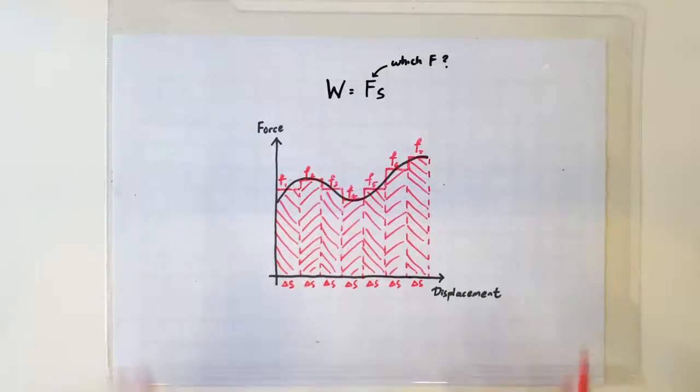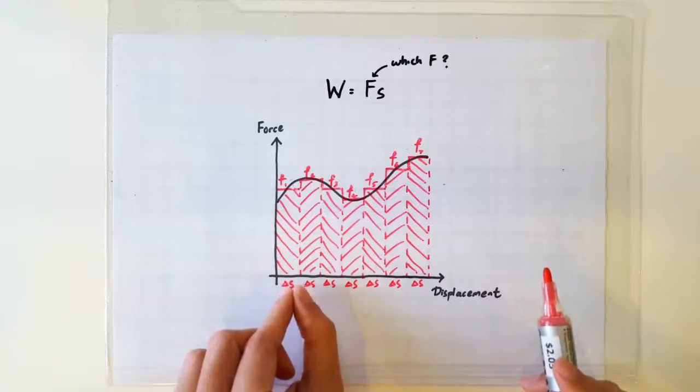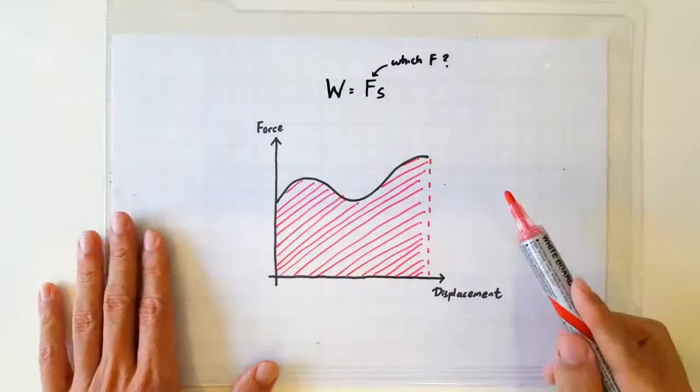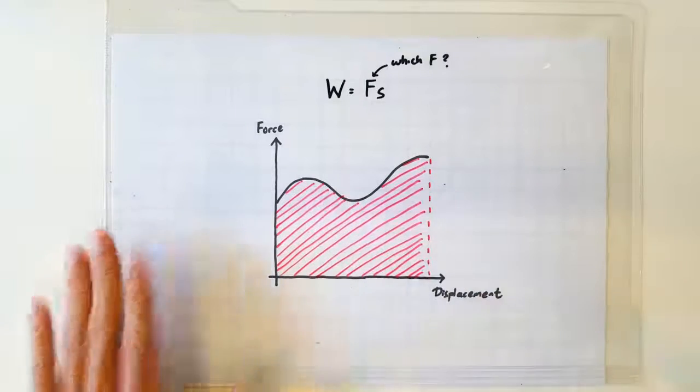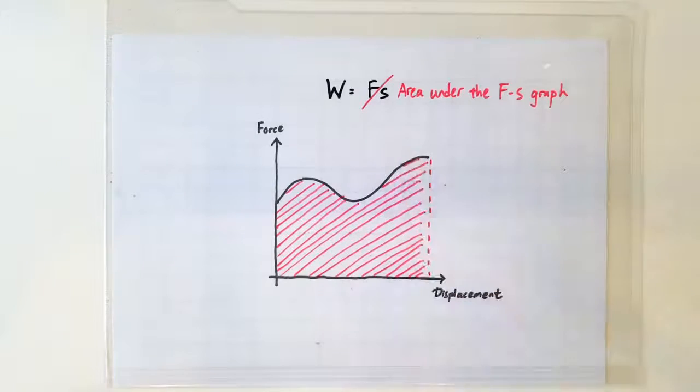So what do we get when we add up the areas of these 1 trillion incredibly thin rectangular segments? What we get is the area under the graph. So if the force is not constant, then we can calculate the total work done by resorting to the area under the Fs graph.